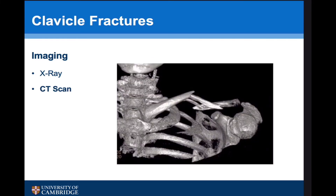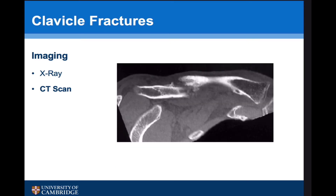CT scans are used rarely. This is a reformatted scan to look at fracture fragment placement — it's rare that we require this. We tend to use a CT scan to look for evidence of delayed or non-union. It can be very difficult on a plain X-ray to determine whether fractures that are a little bit older have truly united, so a CT scan can be very useful there.